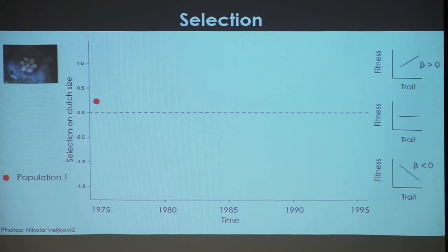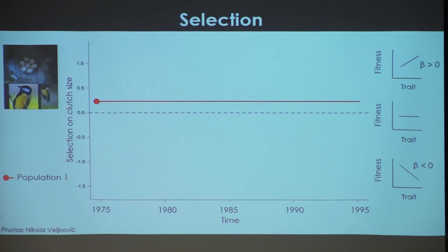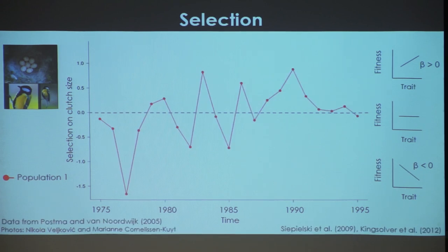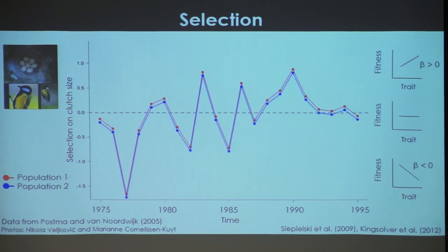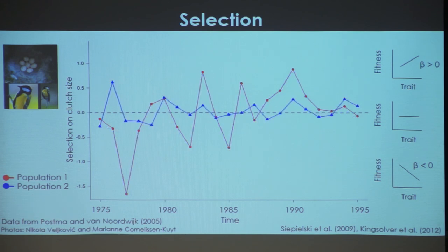Historically we've gone out and measured selection in one population at one point in time, making the assumption that selection is the same through time. But when you do longitudinal studies, selection is actually quite variable. Data for great tits on clutch size show that selection can be very dynamic — you can have very strong positive selection, very strong negative selection, and almost no selection at all depending on the year. Looking at a second population, in a given year one population might experience positive selection on clutch size while another experiences negative, and the strength can differ greatly.